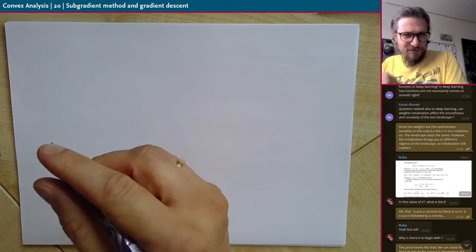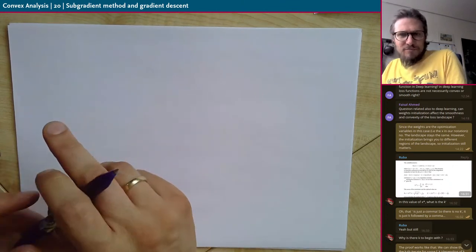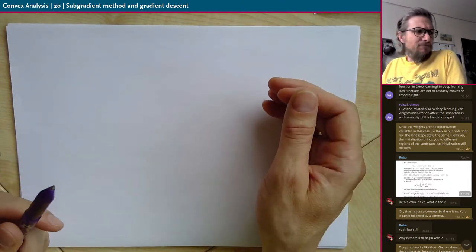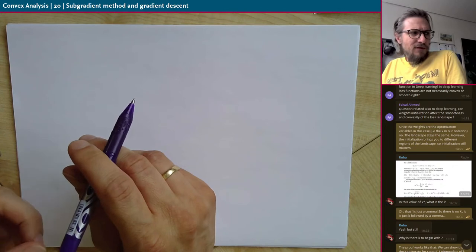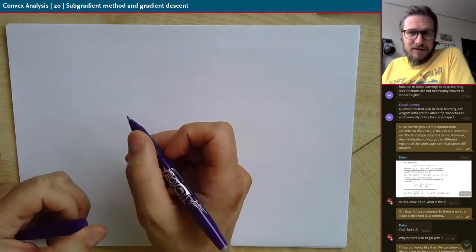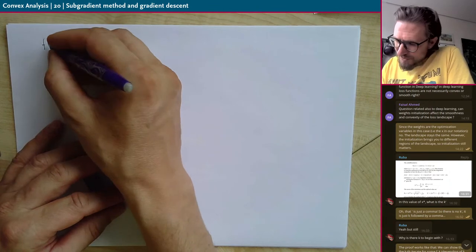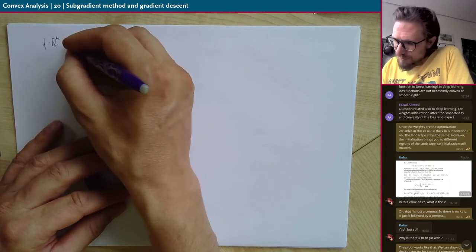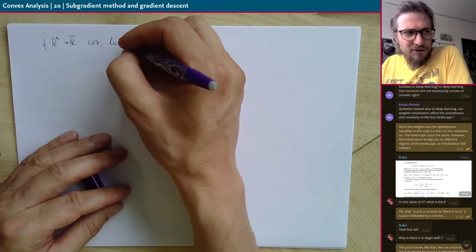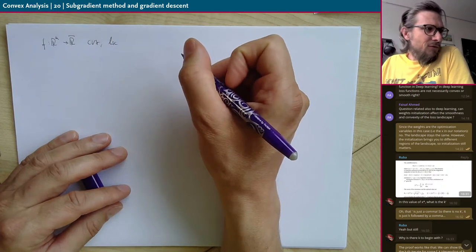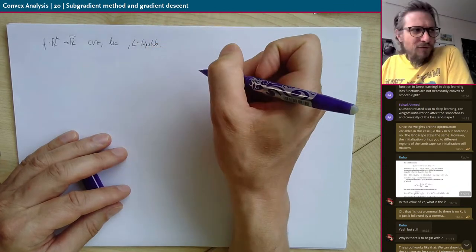Today's lecture covers the subgradient method and gradient descent. We will be brief about the subgradient method because it's not so important practically, and some of the results will be covered in exercise classes. The subgradient method applies when F is defined on R^n to the extended real line, convex and lower semi-continuous, and also L-Lipschitz.